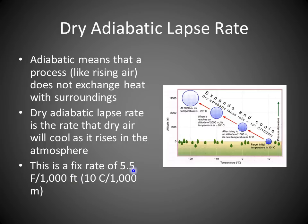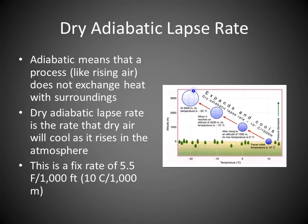The dry adiabatic lapse rate is a fixed rate of about 5.5 degrees Fahrenheit per thousand feet, or 10 degrees Celsius per thousand meters. This diagram shows what happens: at the bottom you have 10 degrees, and as a parcel of air rises through the atmosphere it expands and cools at that fixed rate — 10°C per thousand meters — going to 0, then -10, then -20.